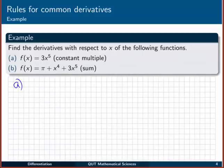Okay, let's take it a little bit further this time. We've got find derivatives with respect to x of 3x to the 5—that's a constant multiple of a power of x—and then π plus x to the 4 plus 3x to the 5. That's a sum of all of the functions we've looked at already: π, x to the 4, and 3x to the 5, so we kind of put everything together there. Again, give yourself a few minutes, have a go at these yourself, and then come back and see if you get what I get.